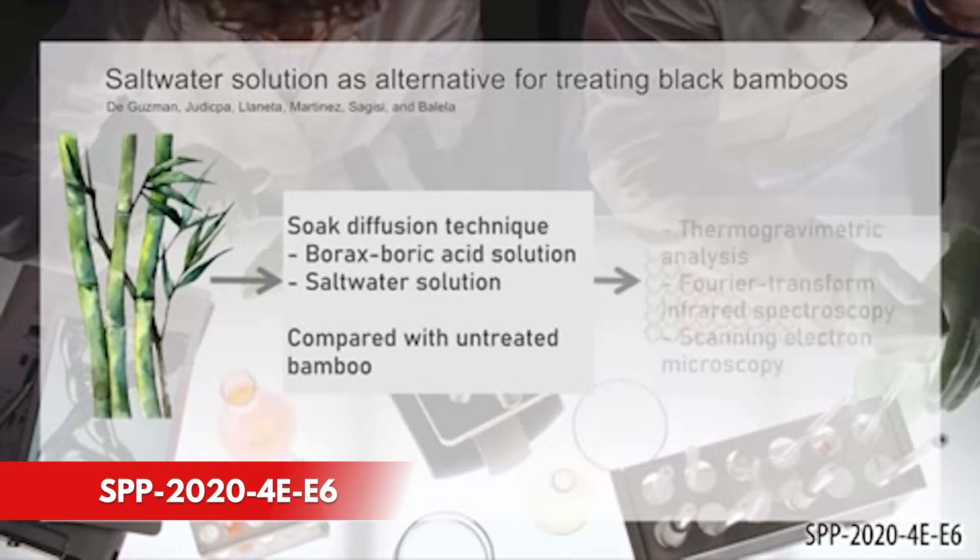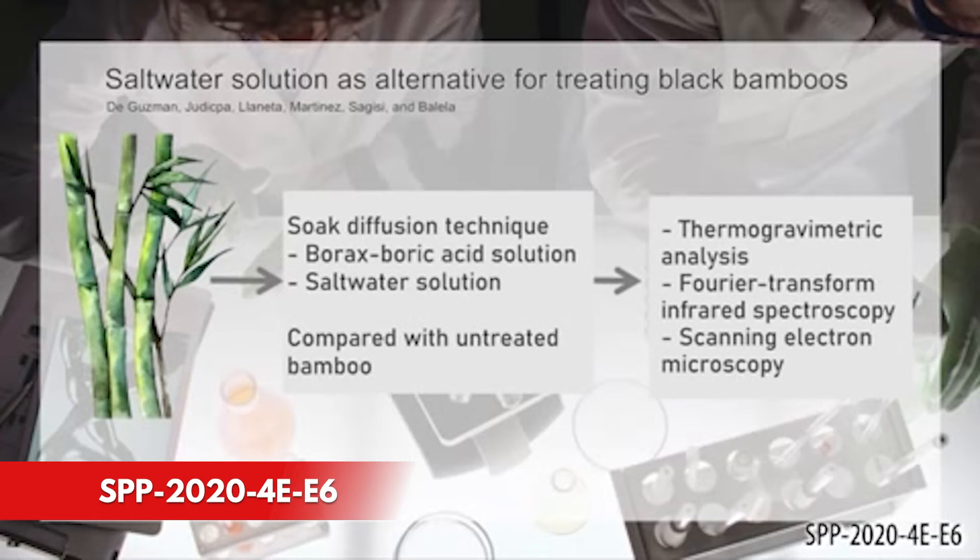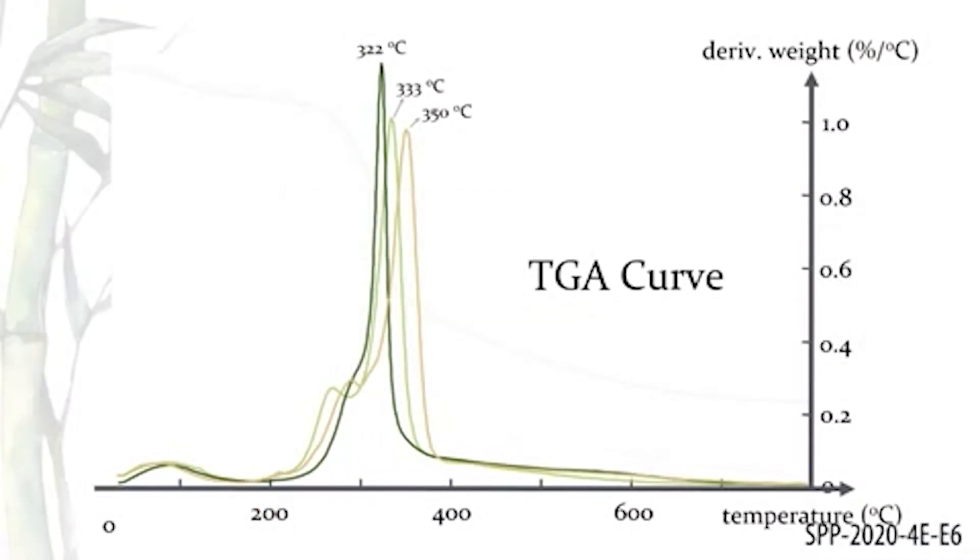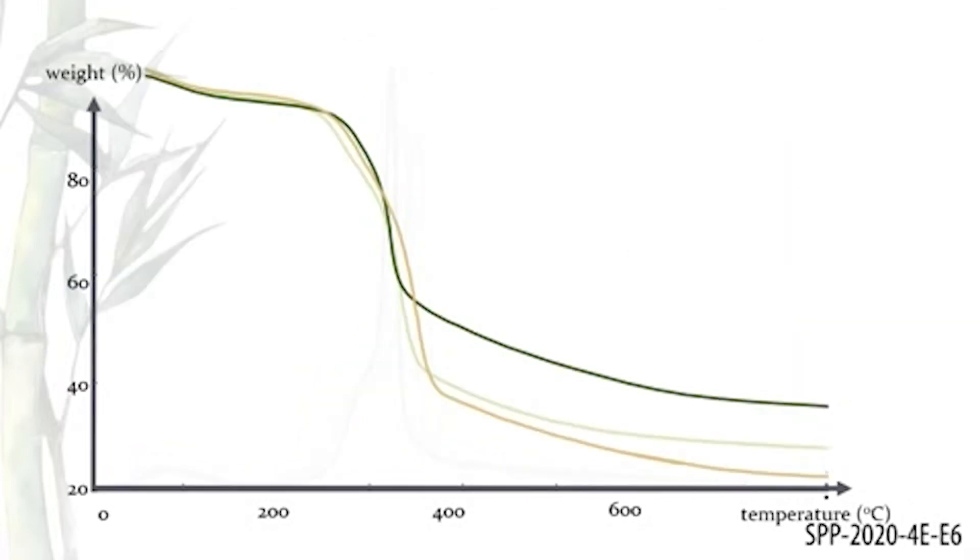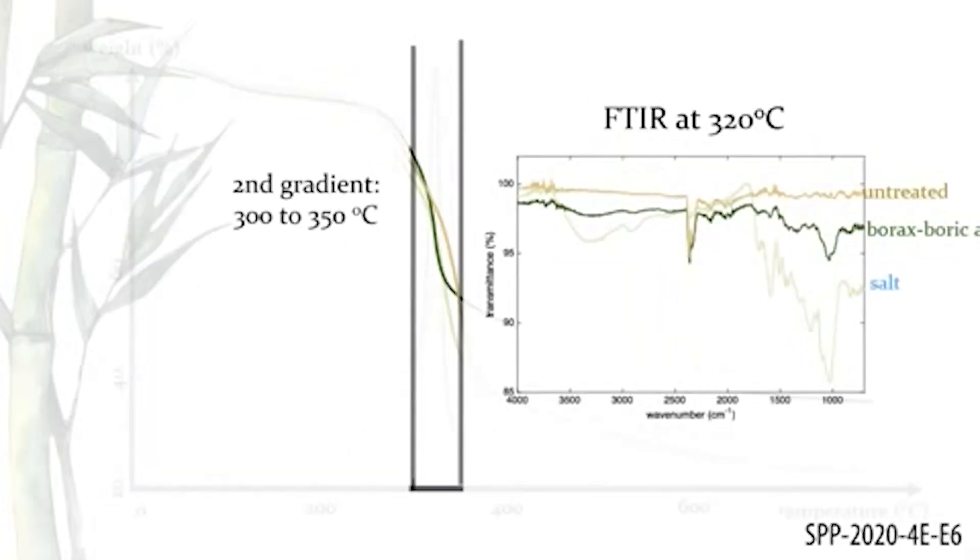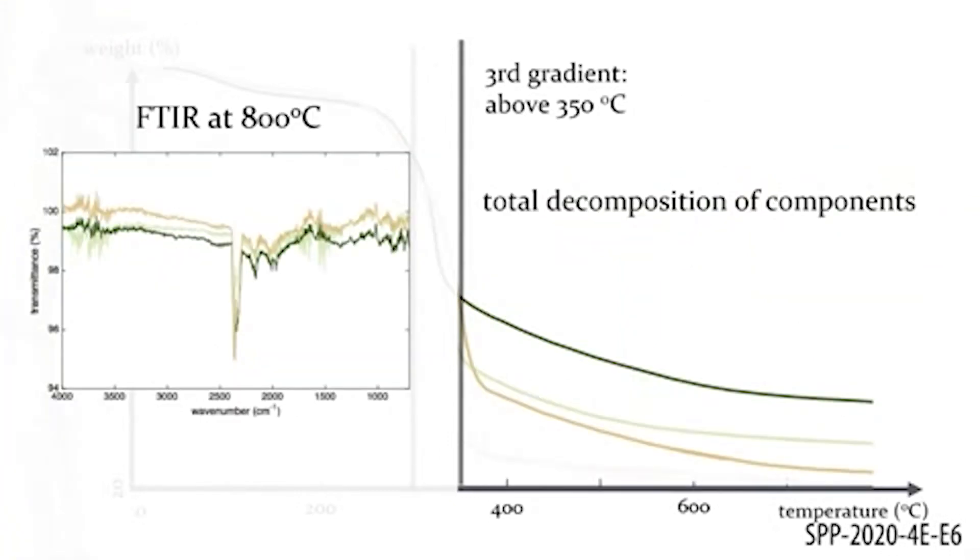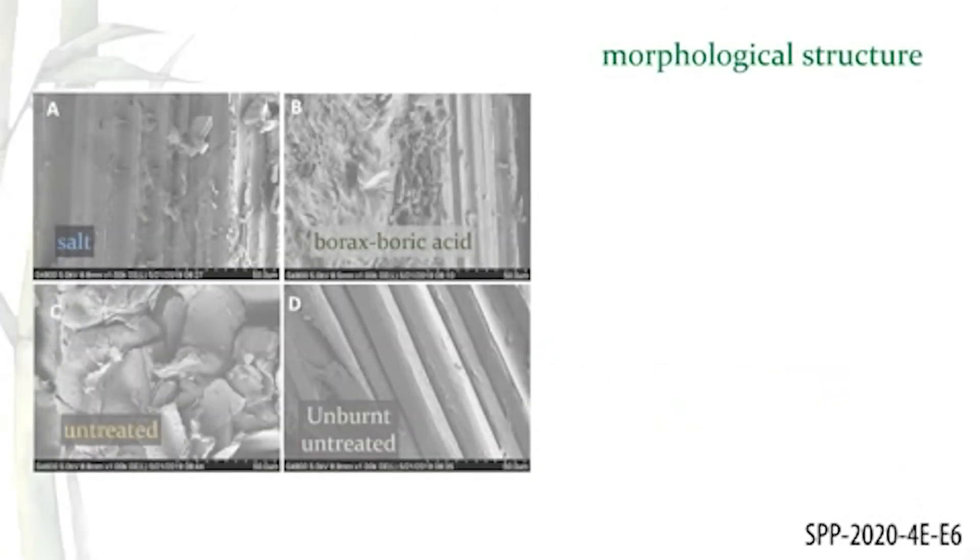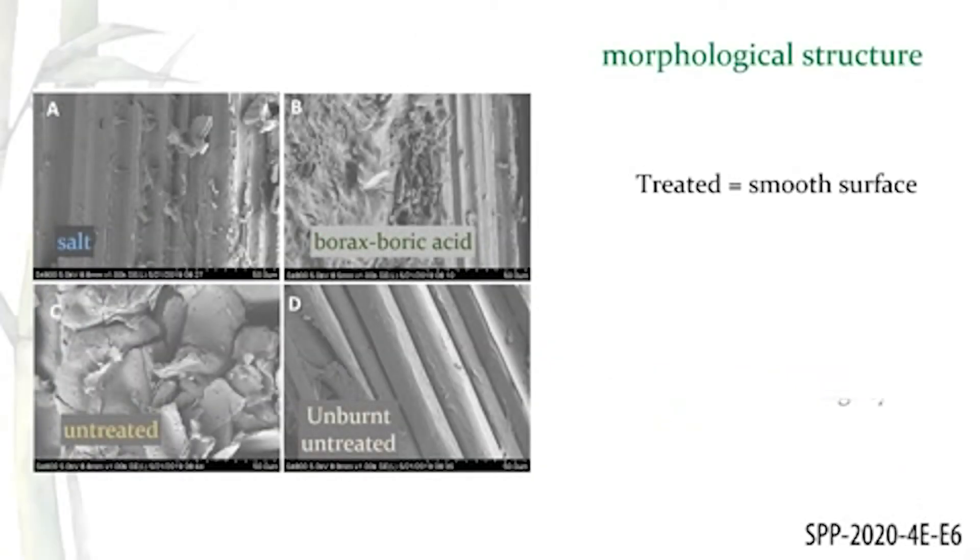Treated and untreated bamboo samples were subjected to thermogravimetric analysis from room temperature to 800 degrees Celsius. The structural changes were monitored using Fourier transform IR spectroscopy. The TGA curve exhibits three gradients indicating weight loss of different bamboo components. The gradient from 200 to 300 degrees Celsius is due to the decomposition of hemicellulose. From 300 to 350 degrees Celsius, pyrolysis and decomposition of cellulose. And finally, at temperature higher than 350 degrees Celsius, the decomposition of lignin. These decomposition events were also observed through FTIR spectra.